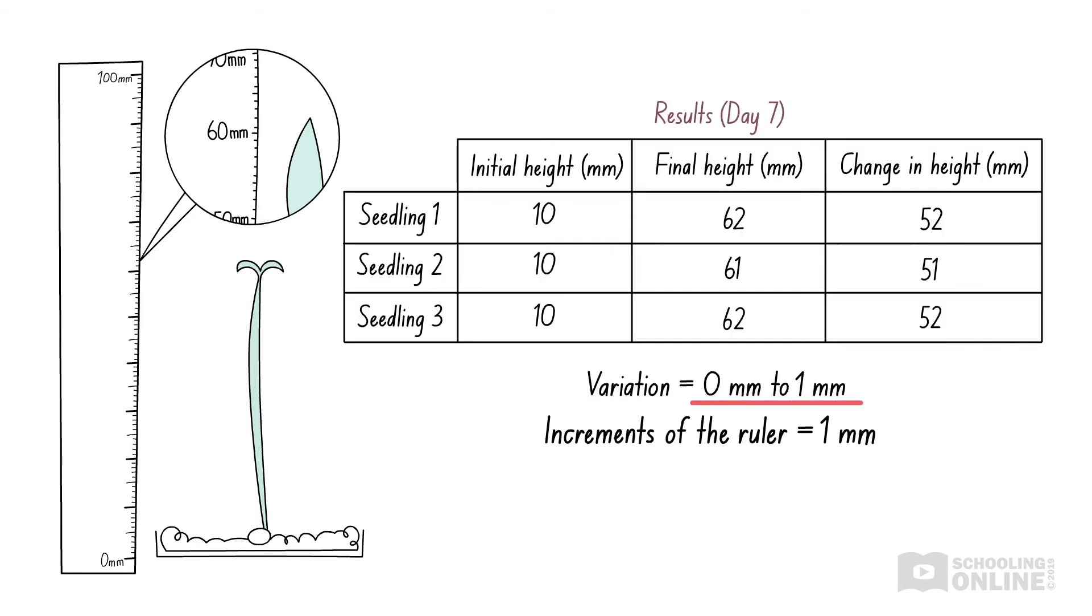Since the variation in the change in height is similar to the increments of the wooden ruler, which is one millimetre, we can say that the random errors are small. Therefore, the results you recorded are reliable.